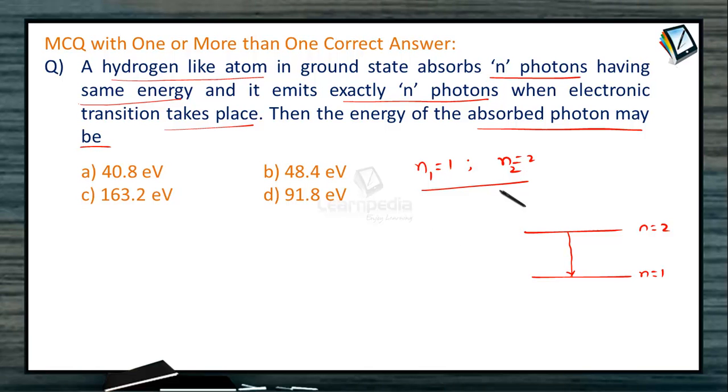The energy difference between second and first orbit in hydrogen-like species is given by ΔE = 10.2 × Z² eV, where Z can vary: for hydrogen atom 1, for helium ion 2, for lithium ion 3, for beryllium ion 4, and so on.